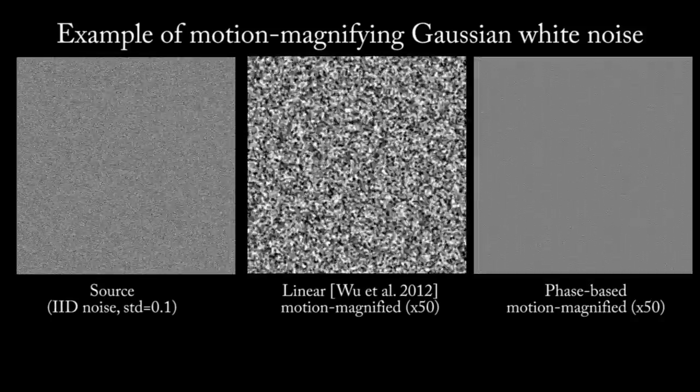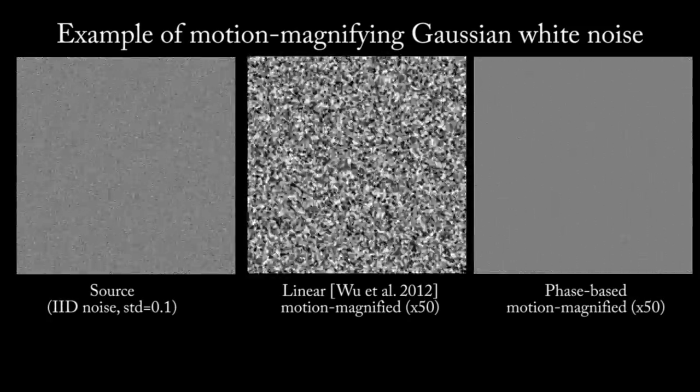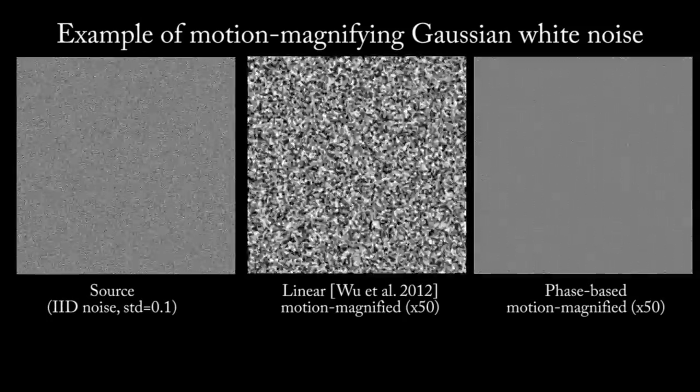The phase-based method also has excellent noise characteristics, as shown here on Gaussian IID noise. The linear method amplifies noise with signal. In contrast, the phase-based method translates rather than amplifies noise.